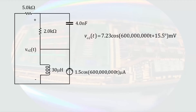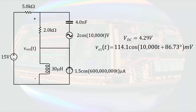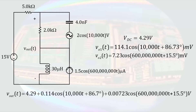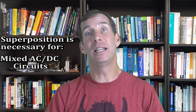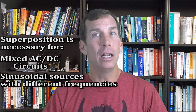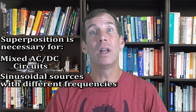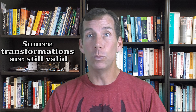We can then take all three contributions back to the original circuit. The DC source contributed 4.29 volts. The 10 kiloradian per second source contributed a cosine function with a magnitude of 114.1 millivolts and a phase angle of 86.73 degrees. The 600 megaradian per second source contributed a cosine function with an amplitude of 7.23 millivolts and a phase angle of 15.5 degrees. Since none of these voltages are similar signals, we write the output voltage as a sum of each result. Sources must be the same type to be analyzed together, and sinusoidal sources must have the same frequency. We also saw that source transformations can be done in the phasor domain.